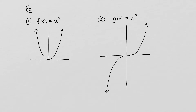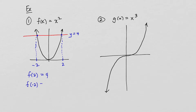Now to further illustrate this, let's take a look at two functions: f of x equals x squared and g of x equals x cubed. We can see very clearly that x squared is not a one-to-one function, because if you draw a horizontal line just about anywhere, it's going to intersect the graph more than once. For example, at y equals 4, there will be an x value of positive 2 and another of negative 2. So f of 2 equals 4 and f of negative 2 also equals 4 — two different x values going to the same y value.